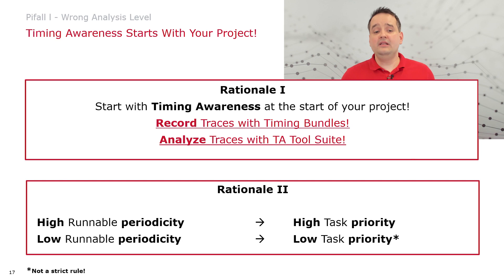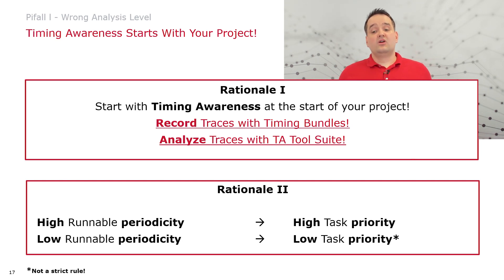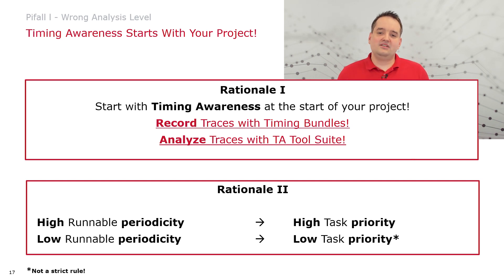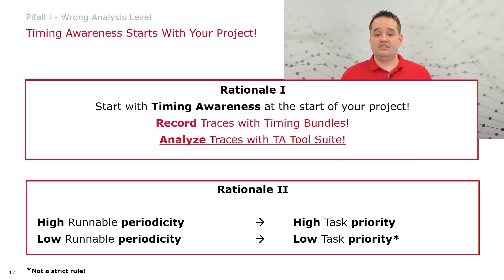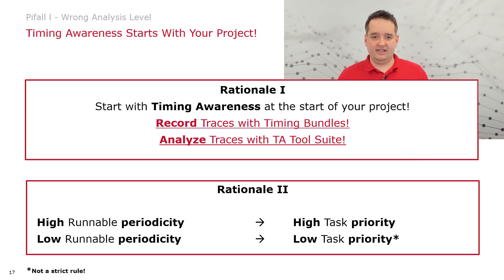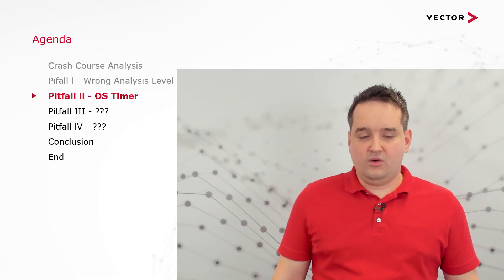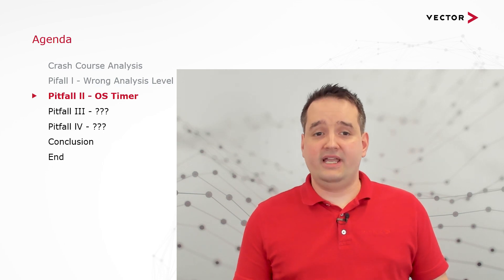As rationale two, which was often an observed pitfall: high runnable periodicity corresponds to high task priority, and low runnable periodicity goes to low task priorities. Please don't consider this a strict rule — if you have, for example, a 100ms runnable with a short runtime that has a high priority, it needs to go to a high task priority as well. With that knowledge, let's move to Pitfall 2: the OS timer.